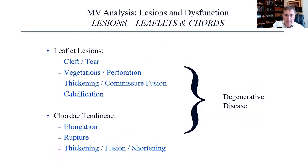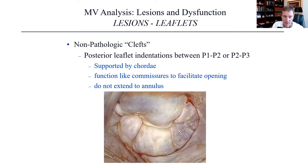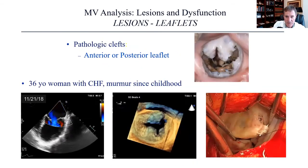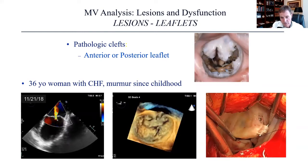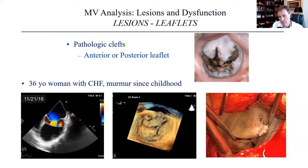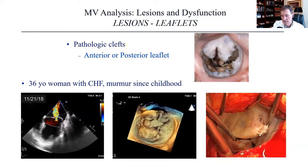Leaflet lesions can be cleft, tear, vegetation, perforation, thickening, commissural fusion, or calcification. Chordae tendineae can be elongated, ruptured, or — as seen with rheumatic disease — thickened, fused, and shortened. We have to define non-pathologic clefts, which are natural in the valve between P1/P2 and P2/P3. They're supported by cords, function like commissures to facilitate wide opening, and don't extend to the annulus — that's what makes them non-pathologic. A pathologic cleft can occur in the anterior leaflet as a congenital abnormality, or in the posterior leaflet causing severe regurgitation. We place the first stitch into that cleft and run it all the way down to the annulus to complete the repair.